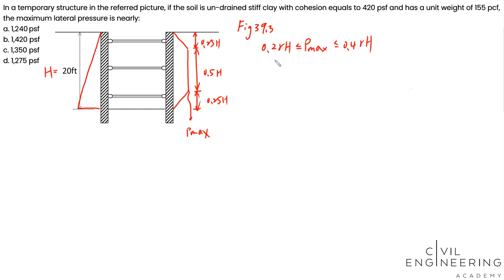And then your P max can be determined as Ka times gamma h. So we just have to compare Ka to 0.2 or 0.4. If this is within 0.2 and 0.4, then we'll use the results that we calculated here. But if this is larger than 0.4, then the maximum we are going to use is 0.4 gamma h. And if it's lower than 0.2, then we have to use the minimum 0.2 gamma h.